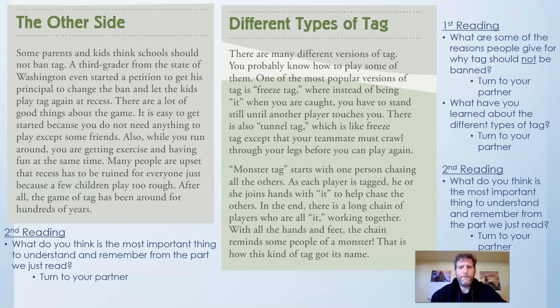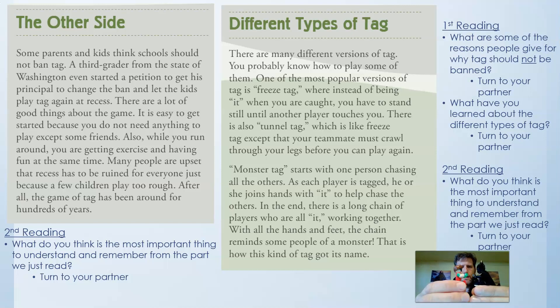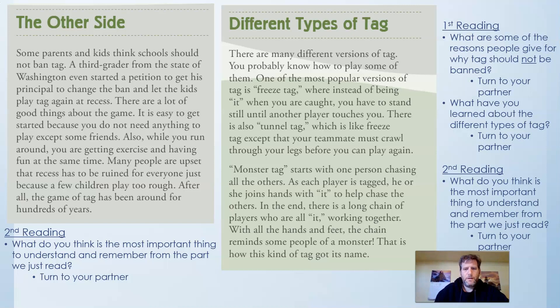Readers, what have you learned about the different types of tag? Turn to your partner. I have learned that there are different kinds of tag games. One tag game that my friend Mr. Freeze likes to play is freeze tag. Yeah, I learned that monster tag is another kind — one person is it, and every time they catch somebody, they have to join arms or hands, and then everyone's it. Thank you, Batman and Robin, for sharing that. That is how the tag game of monster got its name. Let's continue.